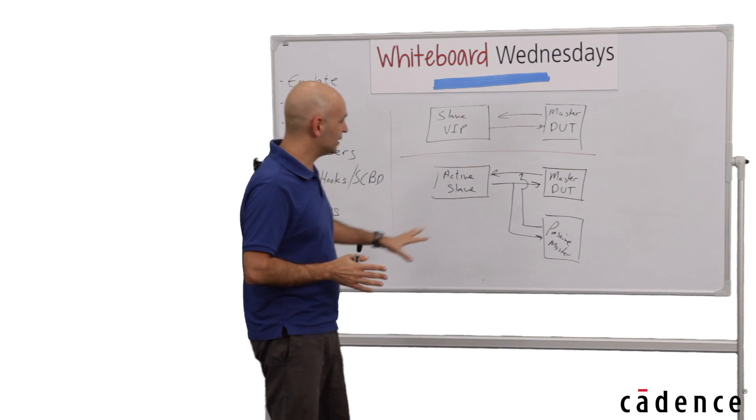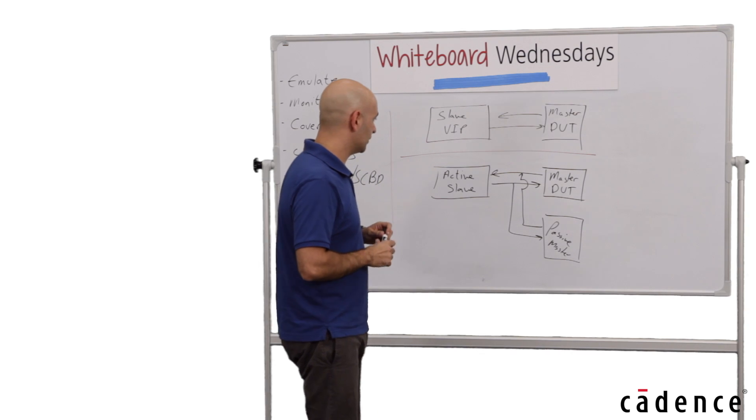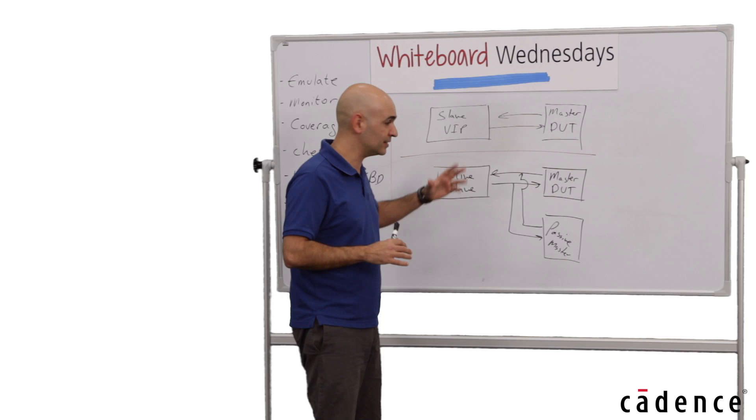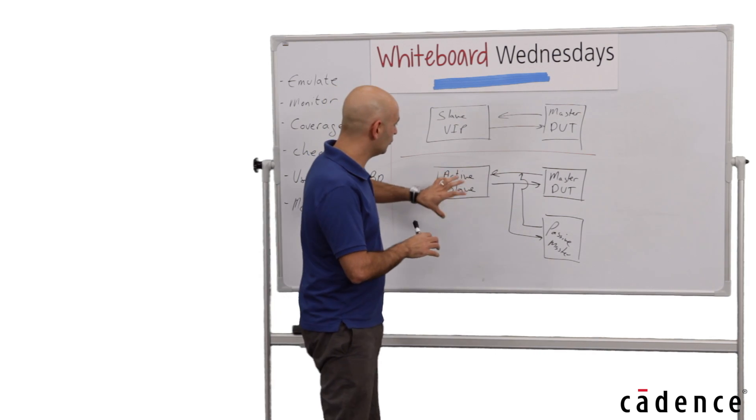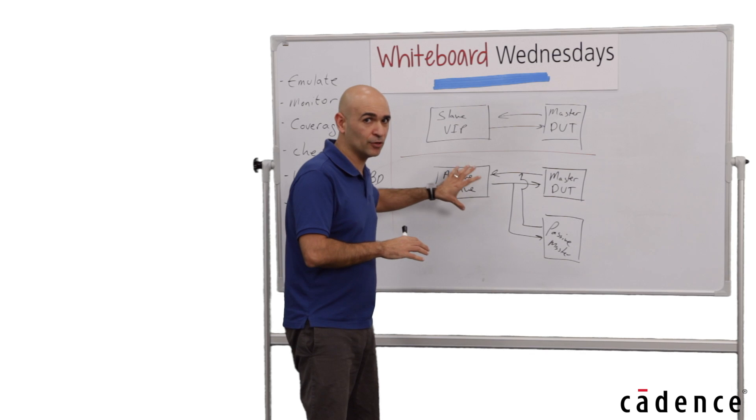Another reason for the separation is that it creates a more modular verification environment. So, for instance, if you move from block-level verification to system-level verification, all you need to do here is just to remove the active slave and put instead of it your RTL or design.